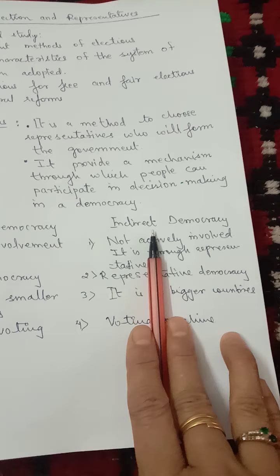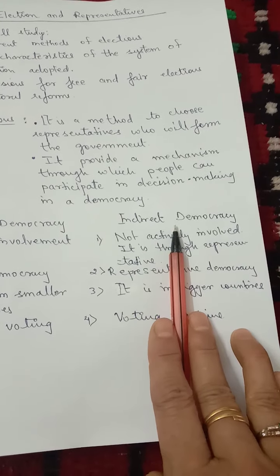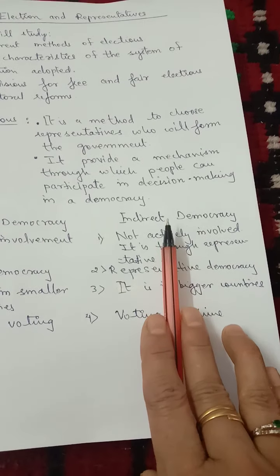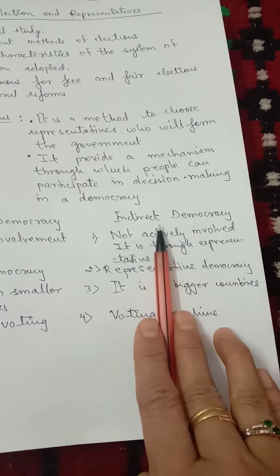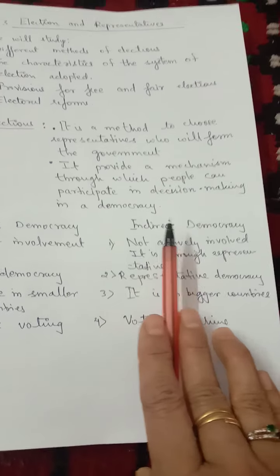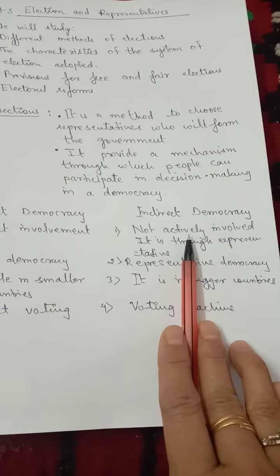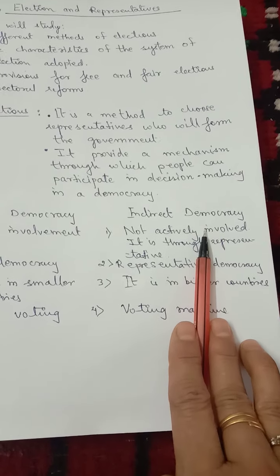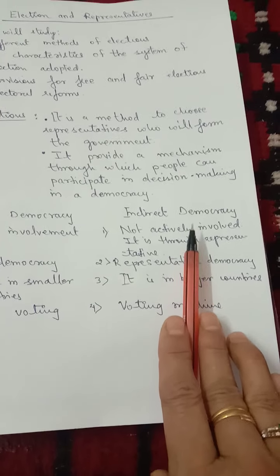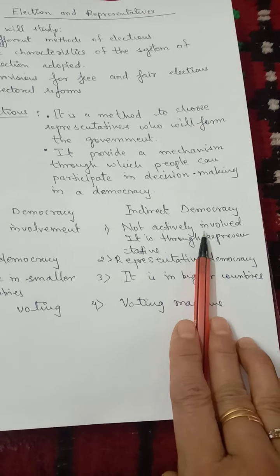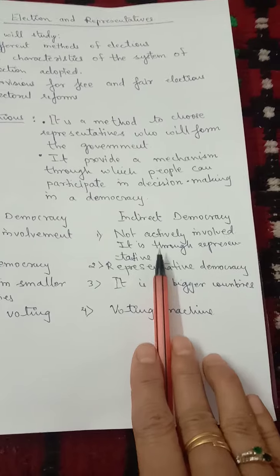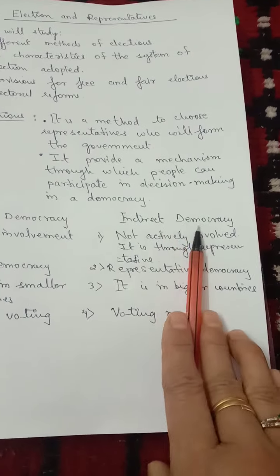But this kind of democracy cannot be practiced when a decision has to be taken by lakhs and crores of people. That is why rule by the people usually means rule by people's representatives. People elect their representatives. In such an arrangement, citizens choose their representatives who in turn are actively involved in governing and administering the country. The citizens have a limited role in taking major decisions and running the administration in indirect democracy.